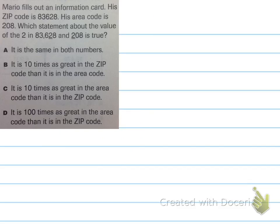Last practice. Mario fills out an information card. His zip code is 83,628. His area code is 208. Which statement about the value of the 2 in 83,628 and 208 is true? Well, let's see. Mario has a zip code and an area code. It gives us those numbers, but the question really doesn't refer to zip codes and area codes. It's just kind of using those numbers. So, I'm really just going to focus on this question here, right?